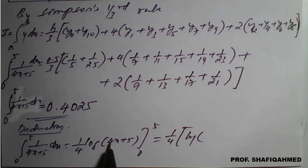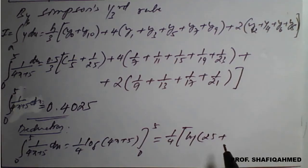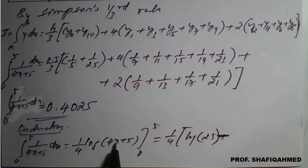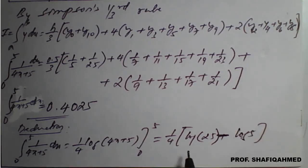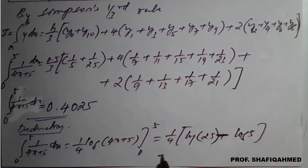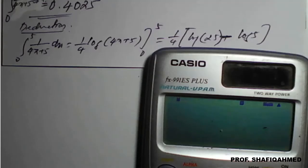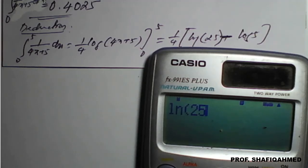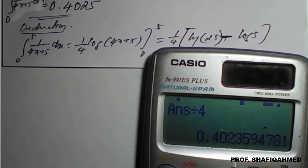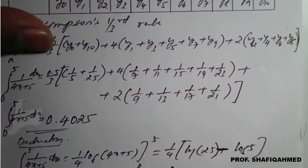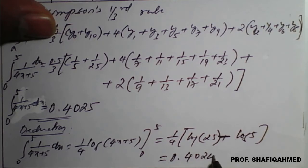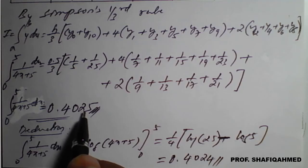Limit from 0 to 5: so 1 upon 4 times [log(4x + 5)]. Apply x = 5: 4×5 = 20, 20 + 5 = 25. Lower limit: replace x = 0, so log of 5. So log(25) minus log(5), divided by 4. Using ln: ln(25) minus ln(5), divided by 4 — you get 0.40235, which to 4 decimal places is 0.4024.